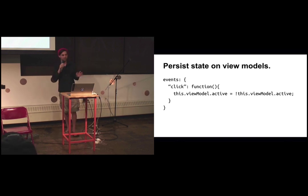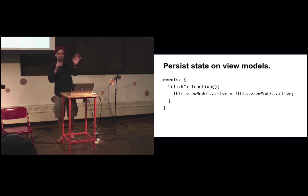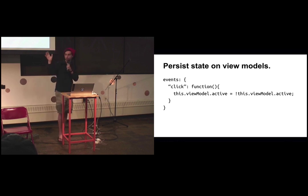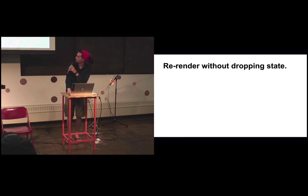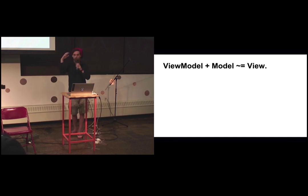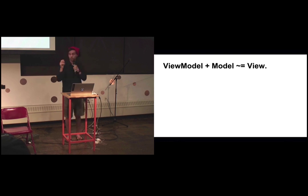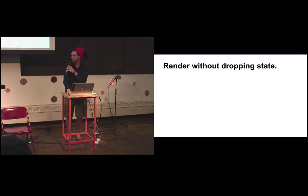The trick is to persist your view state in a view model. View models are just like a regular model — a place where you save data, and you're going to render based on that view model. The state isn't persisted in the DOM. You don't set classes or anything like that. You just say, 'View model, what's going on with this value?' and render accordingly. View model isn't something baked into Marionette — it's just another model, a regular model holding some state. Now we can re-render without dropping state.